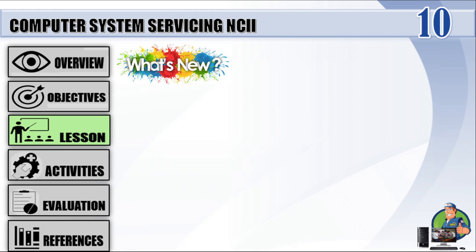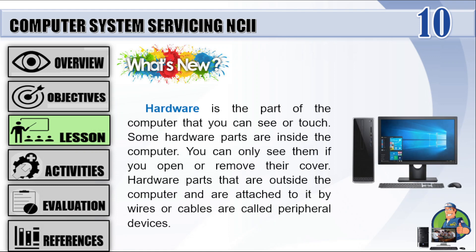Hardware is the part of the computer that you can see or touch. Some hardware parts are inside the computer; you can only see them if you open or remove their cover. Hardware parts that are outside the computer and are attached to it by wire or cables are called peripheral devices.